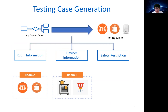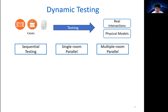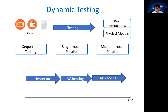The first major component is real physical interaction discovery, with two sub-components: testing case generation and dynamic testing. Test case generation collects app control flow, device room information, device possible commands, and user safety restrictions to generate testable cases. For example, in room A it generates two test cases for the window and heater, but for room B, because of safety restrictions to the sprinkler, it only generates one stove case. After case generation, the system tests these cases to identify real physical interactions. The dynamic testing has three steps, the first being sequential testing to test all non-parallelizable cases in proper order, reducing overhead by choosing the proper testing sequence.